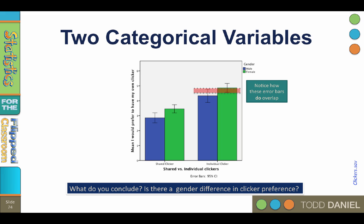Again, we should do a t-test in order to make a determination, but the error bars suggest that there is not a gender difference in clicker preference.